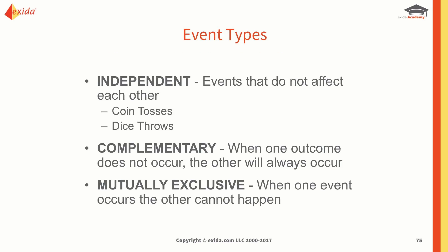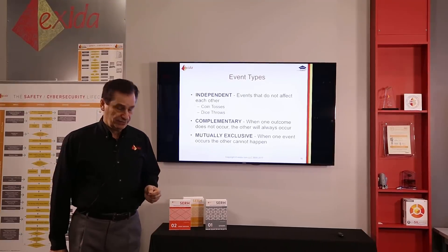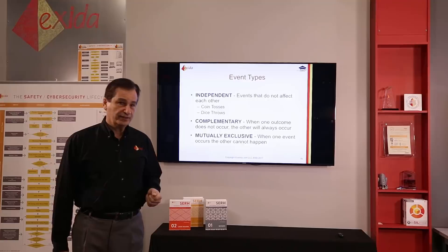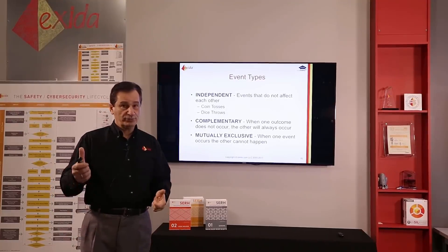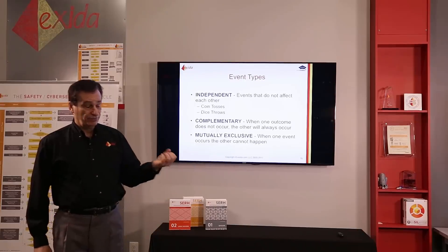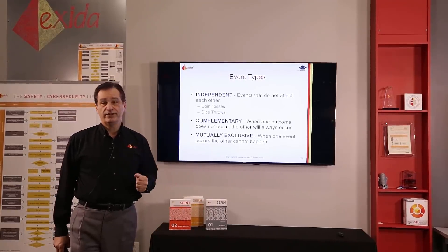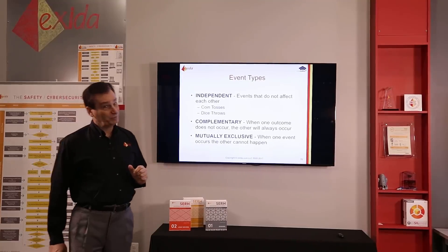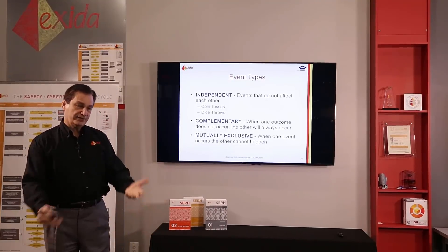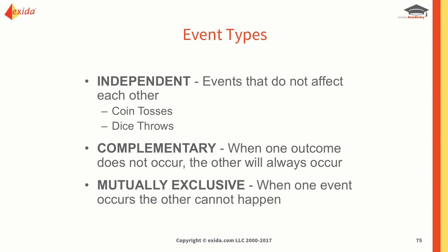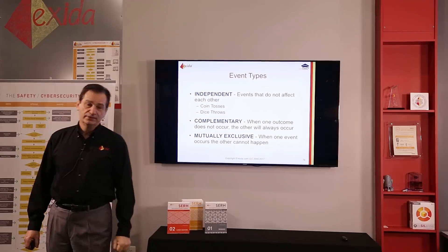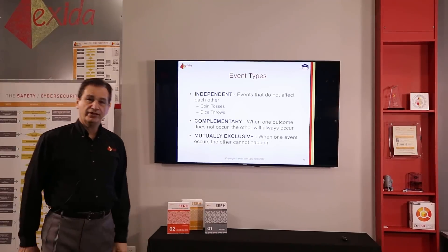When it comes to event types, we talk about three different types. First, independent events — these are events that do not affect each other. For example, when you toss a coin the outcome of the first toss is not going to affect the outcome of the second toss, and you can do two in parallel. The same with a die: the outcome of the first throw is not going to affect the outcome of the second, provided of course it's not a loaded die.